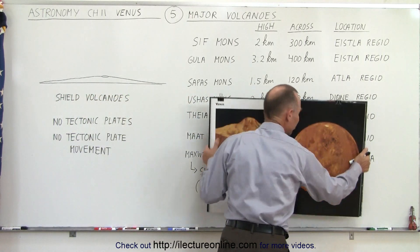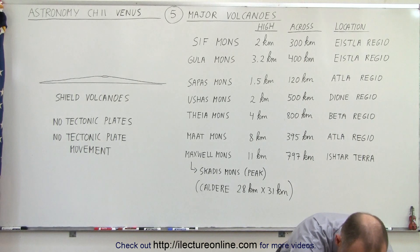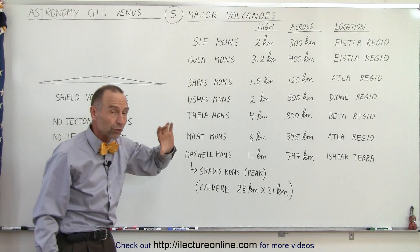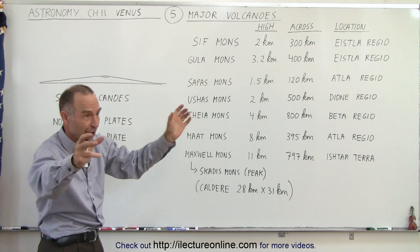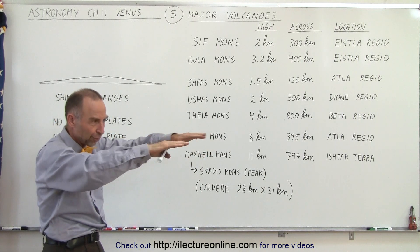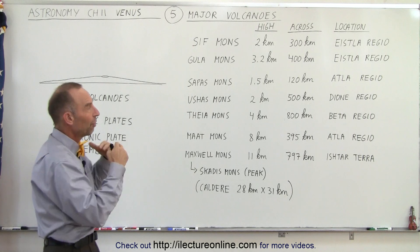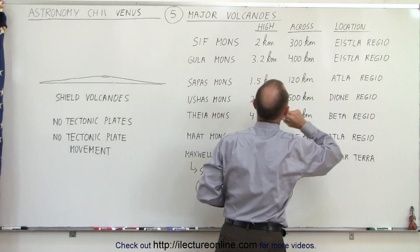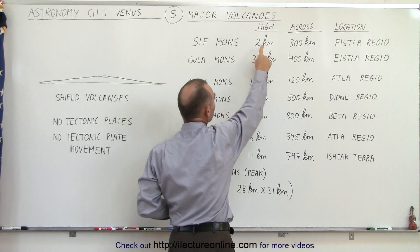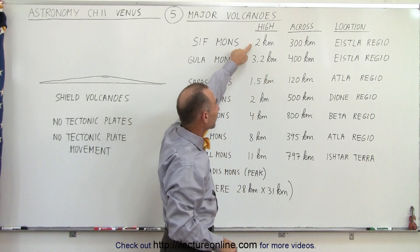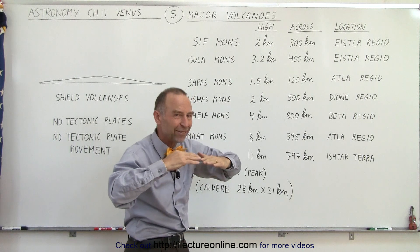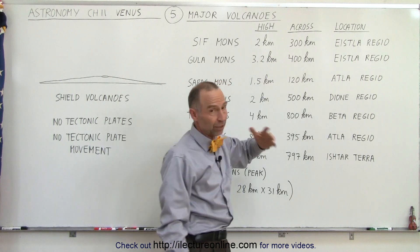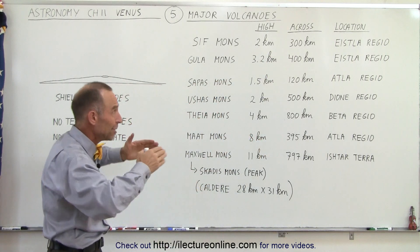Now let's take a look at some of the major mountains on the surface of the planet. We have what we call Sif Mons and Gula Mons. Both of those mountains are relatively close, and sometimes you see pictures of both in the same image. These are simply computer images of what it would look like if you were to fly over the surface. Both are in the Estla Regio. Sif Mons has a height of 2 kilometers and Gula Mons is 3 kilometers. In feet, that's roughly 6,000 to 10,000 feet. The base measures 300 and 400 kilometers across — 400 kilometers is about 250 miles — so these are enormous mountains.